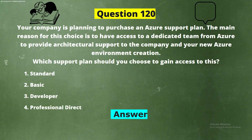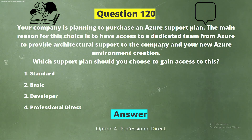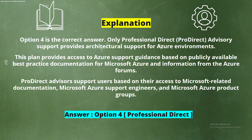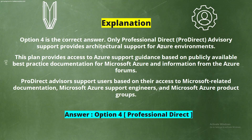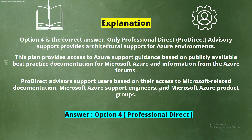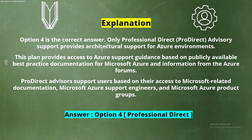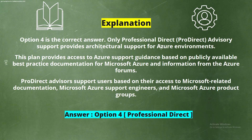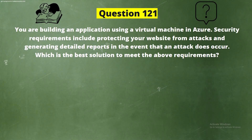And the correct answer is Option 4, Professional Direct. Explanation: Option 4 is the correct answer. Only Professional Direct advisory support provides architectural support for Azure environments. This plan provides access to Azure support guidance based on publicly available best practice documentation for Microsoft Azure, information from Azure forums, Pro Direct Advisors, Microsoft Azure support engineers, and Microsoft Azure product groups.